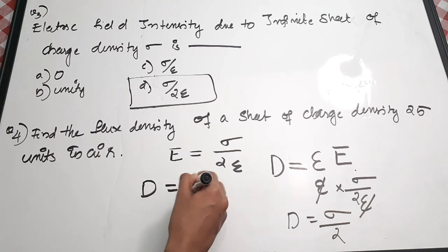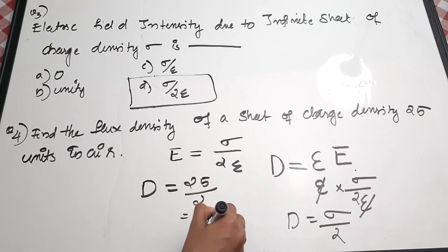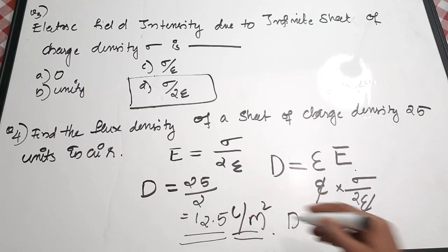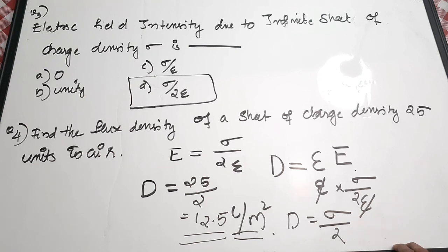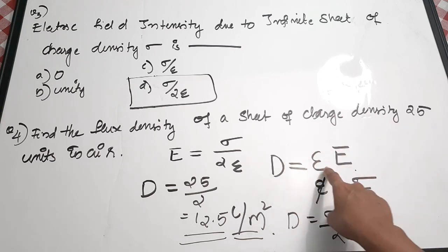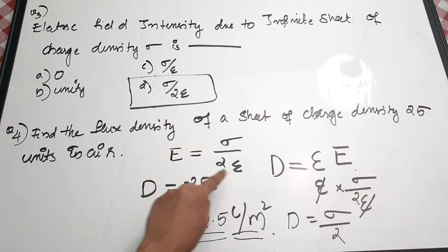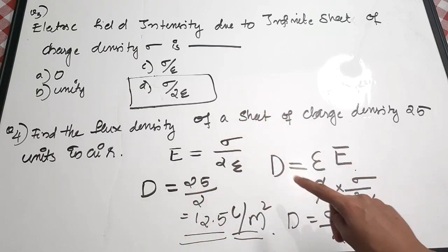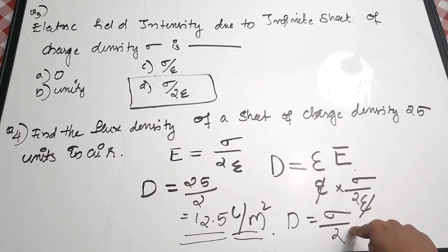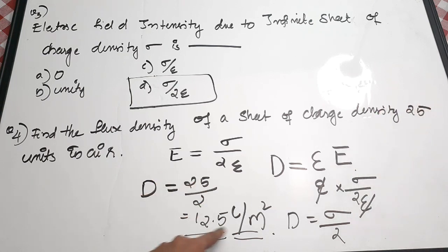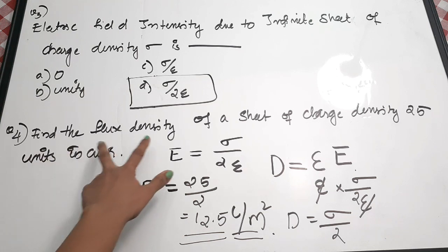With sigma = 25 units: D = 25/2 = 12.5 coulombs per meter squared. The unit for flux density is C/m². So the key steps are: write D = εE, substitute E = σ/(2ε), cancel epsilon, then substitute the given charge density to get σ/2 = 12.5 C/m².